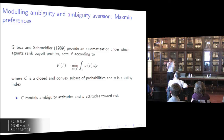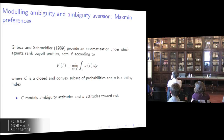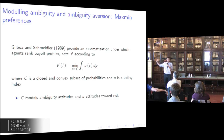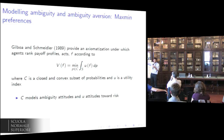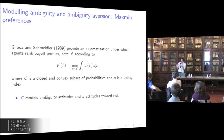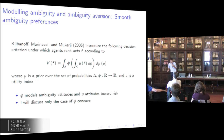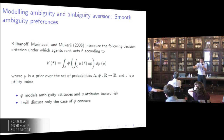Going back to the presentation: C is a closed and convex subset — I mentioned it's unique once you impose this mathematical constraint, and I mentioned why uniqueness is important. U is just a utility function over outcomes. You can show formally that C models ambiguity attitudes and U models attitudes towards risk. This is not just a mathematical representation — it captures features connected to behavior. In particular, C captures attitudes toward not knowing the odds, and U captures attitudes toward risk.